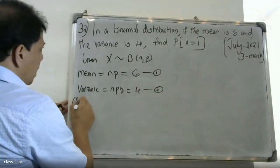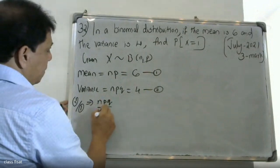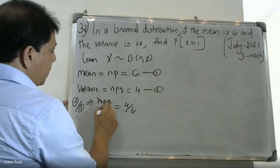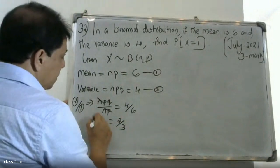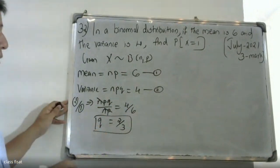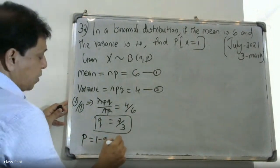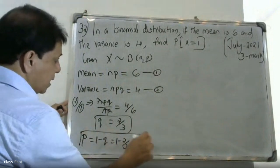Dividing equation 2 by equation 1: npq/np = 4/6, which simplifies to q = 2/3. Therefore, p = 1 - q = 1 - 2/3 = 1/3.